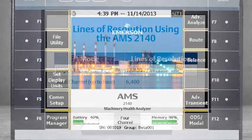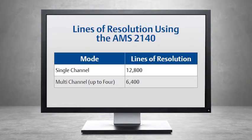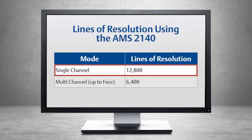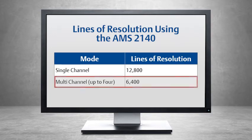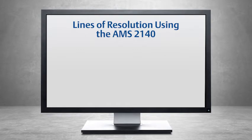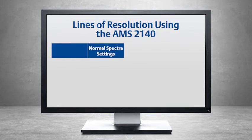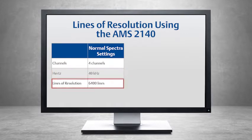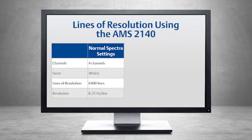Before we get started, let's review how lines of resolution are impacted using True Zoom. The AMS 2140 has 12,800 resolution lines in single-channel mode or 6,400 lines in multichannel mode. For example, if we collect normal spectra data using four channels with an Fmax of 40 kHz and 6,400 lines of resolution, our resolution is 6.25 Hz per line. This means that in every resolution line in the spectrum, you have a digital step of 6.25 Hz.